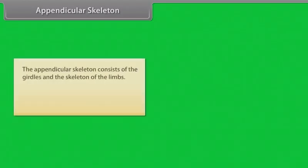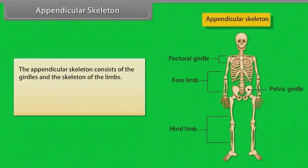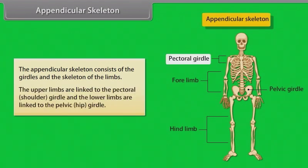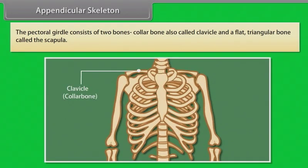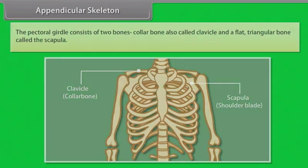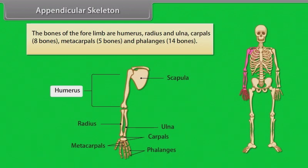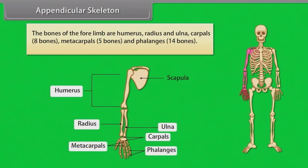The appendicular skeleton consists of girdles and the skeleton of the limbs. The upper limbs are linked to the pectoral (shoulder) girdle, and the lower limbs are linked to the pelvic (hip) girdle. The pectoral girdle consists of two bones: the collar bone, also called the clavicle, and a flat triangular bone called the scapula. The bones of the forelimb are: humerus, radius, and ulna; carpals (eight bones); metacarpals (five bones); and phalanges (fourteen bones).